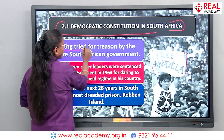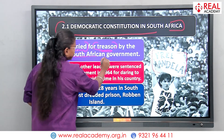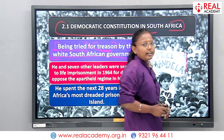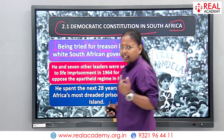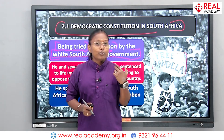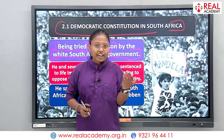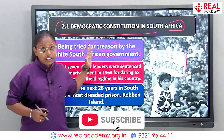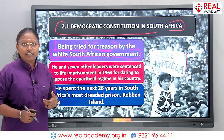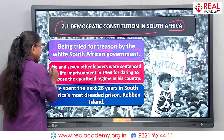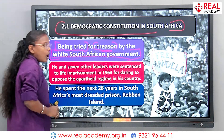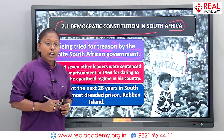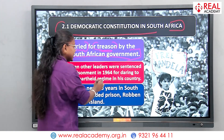Mandela was tried for treason by the white South African government. He was put behind bars for going against the government. When you try to raise questions or agitate, everyone feels you're going against someone. He raised his voice against the white South African government, and he along with seven other leaders were sentenced to life imprisonment. That happened in 1964.